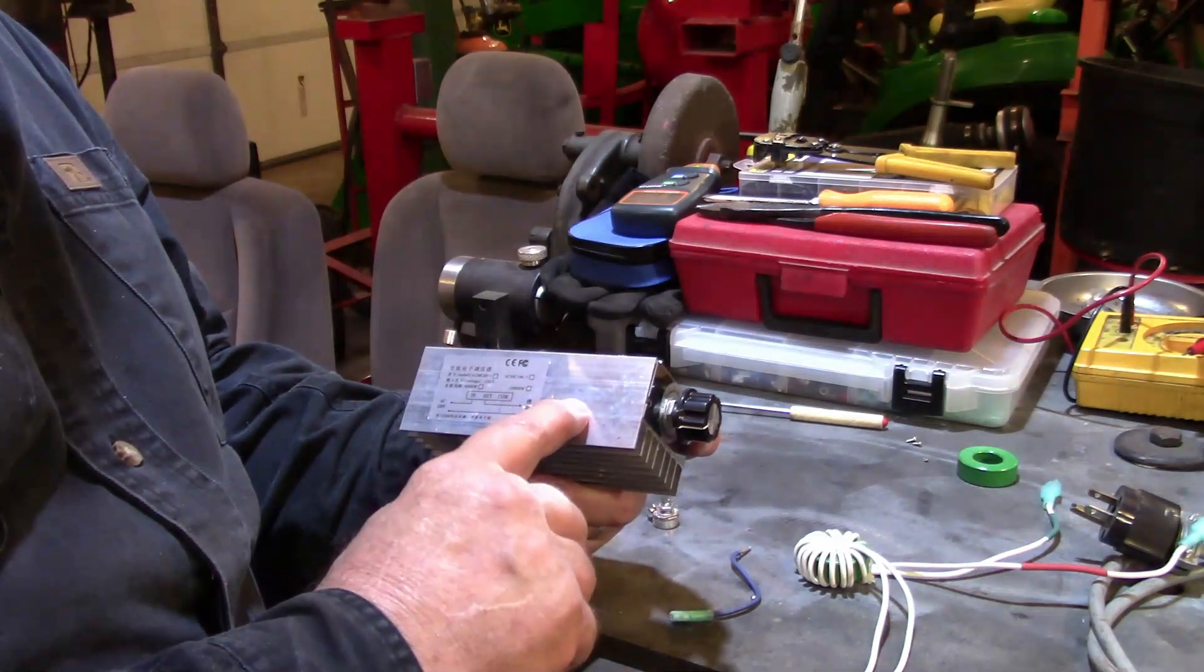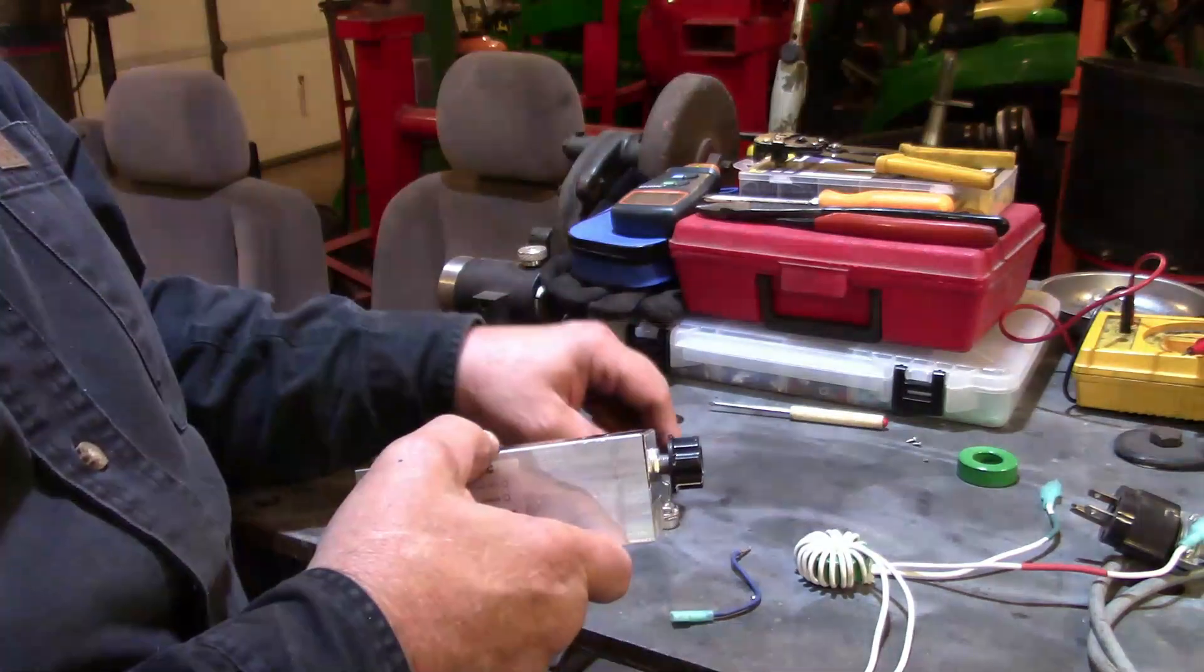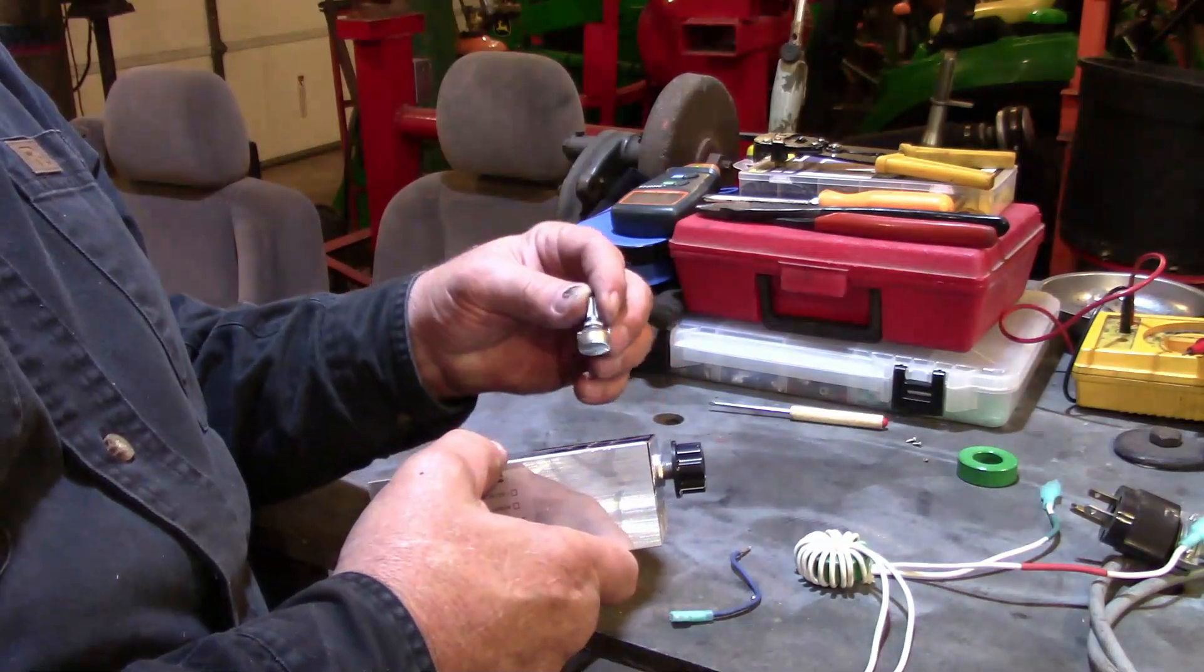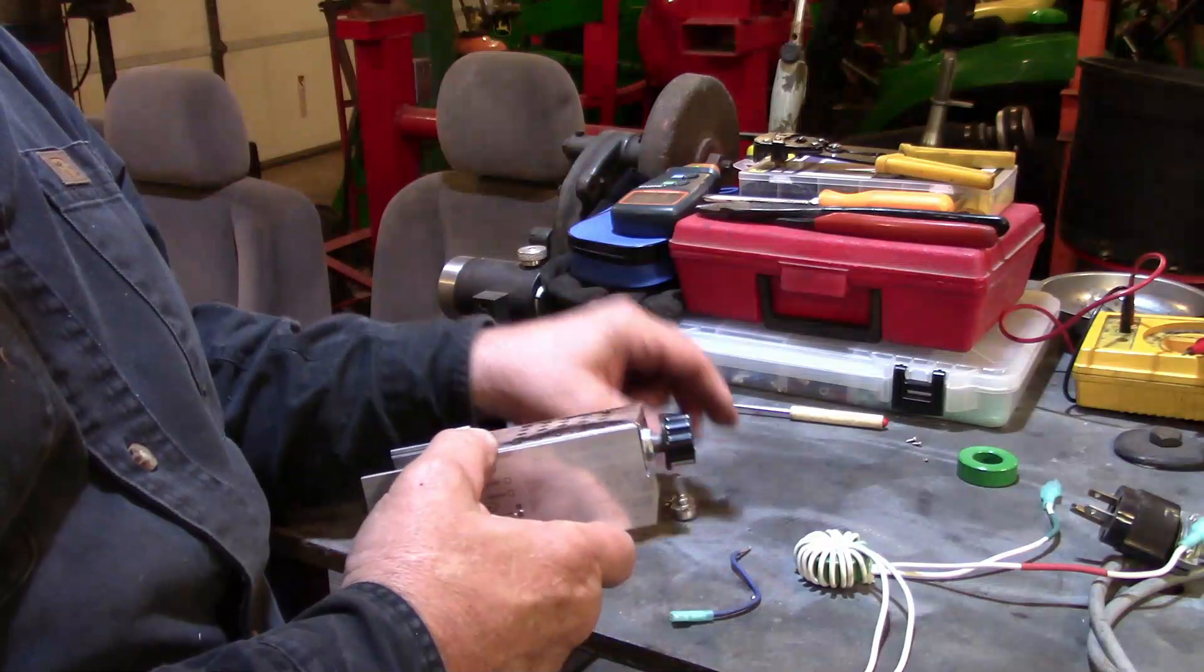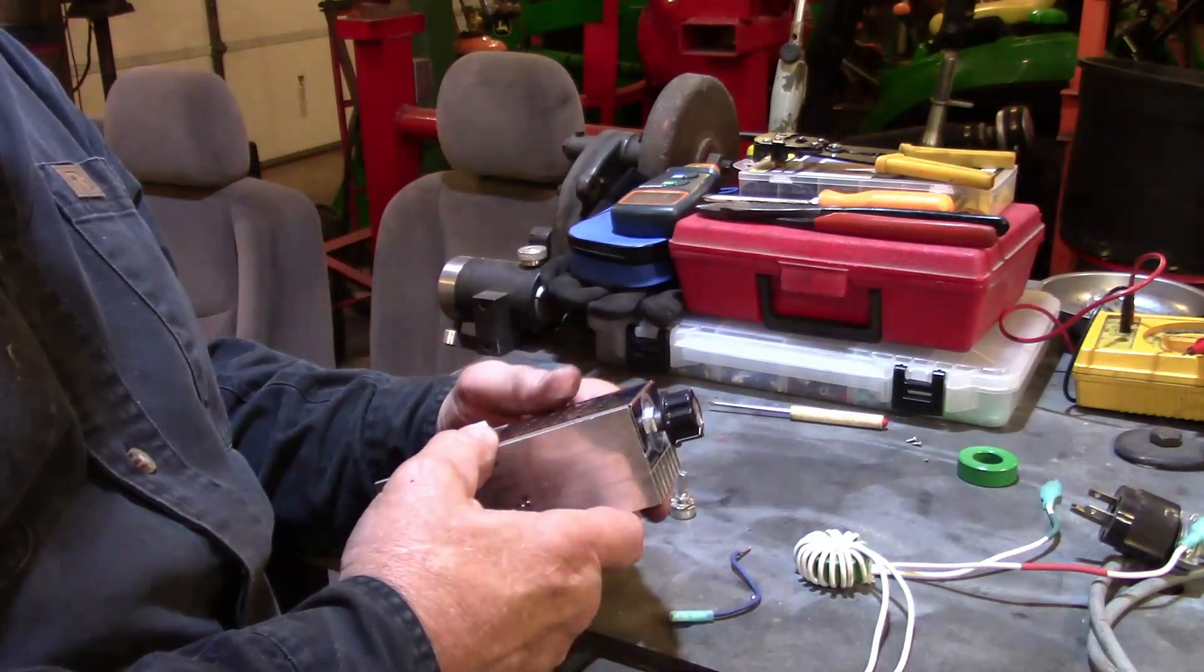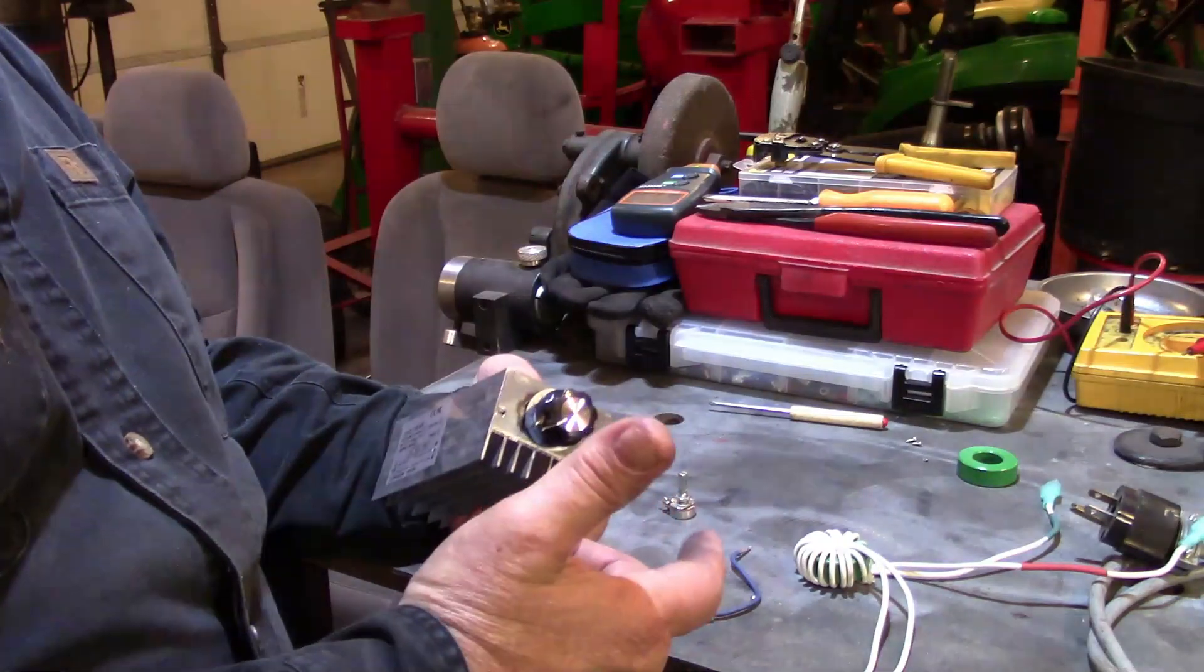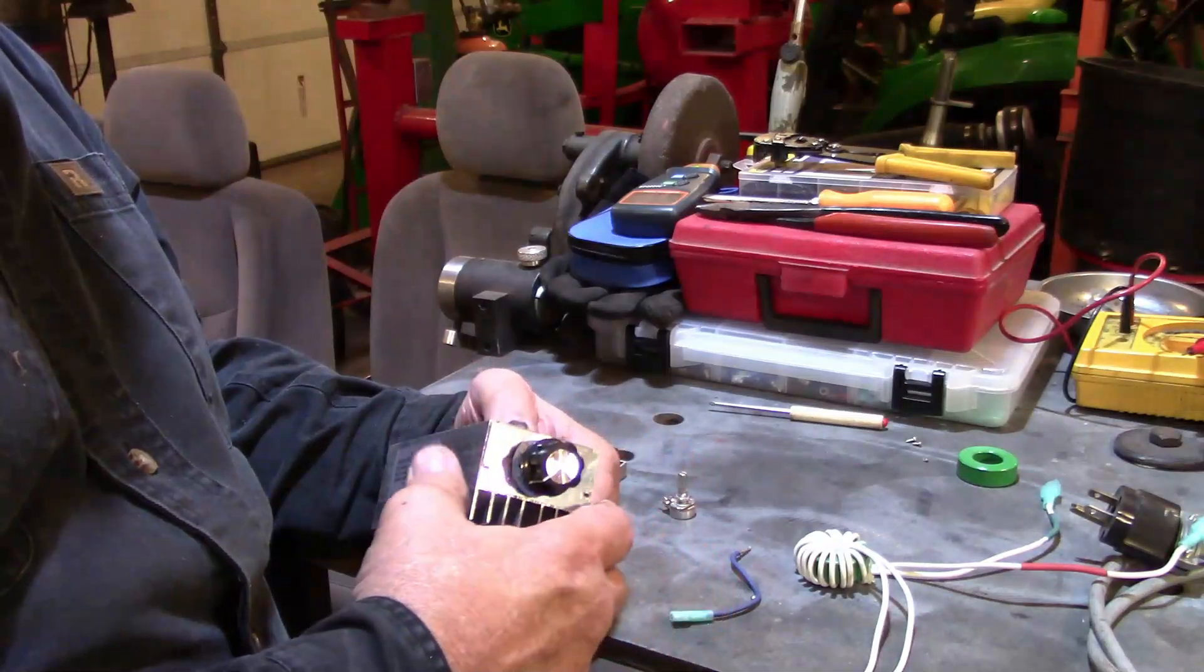One thing that I'm going to have to change on this is the little rheostat, and this one is a 200k rheostat. The one that's in here is a 500k rheostat, and it probably would be easier for me to show you why I need to change it out than explain it.